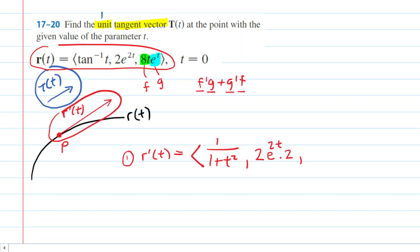So we'll take the derivative of f, the derivative of 8t is just 8, and then we'll multiply that by g, which is e to the t. And then we'll add the derivative of g, so the derivative of e to the t is e to the t, and then multiply that by just f, which is 8t.